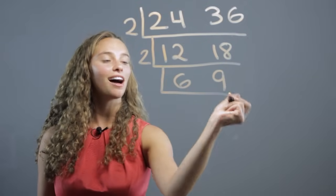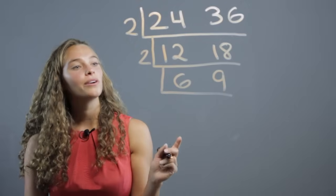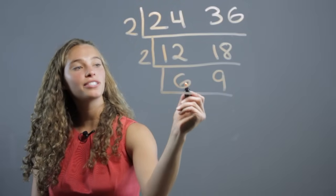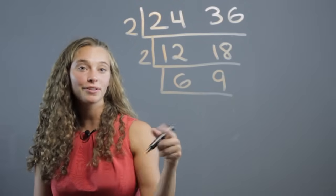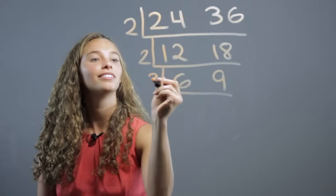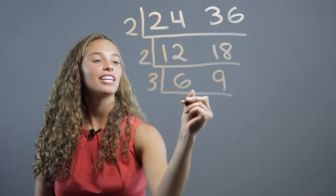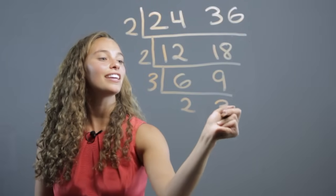Again, we make the L. Now, the smallest prime number that goes into 6 and 9, it's not going to be 2, it's going to be the next one, 3. Divide 6 by 3 to get 2. Divide 9 by 3 to get 3.